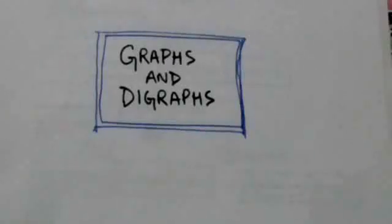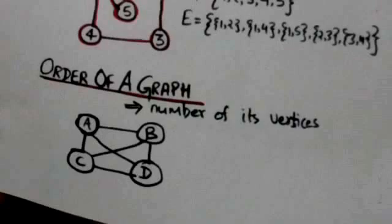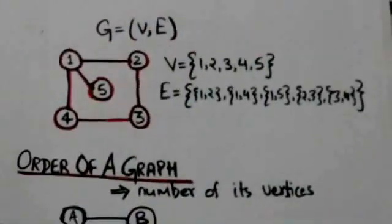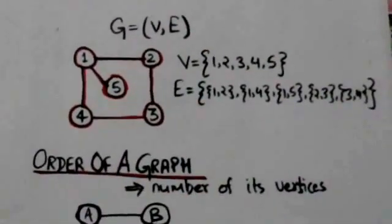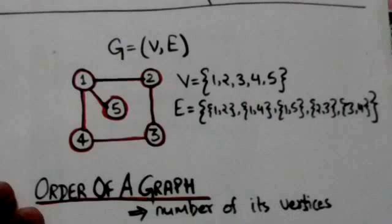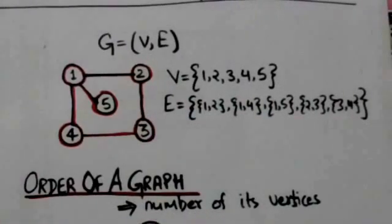Hello friends, welcome back. In this tutorial we will study about graphs and digraphs. A graph G consists of a set V of vertices and a collection E of unordered pairs of vertices called edges.